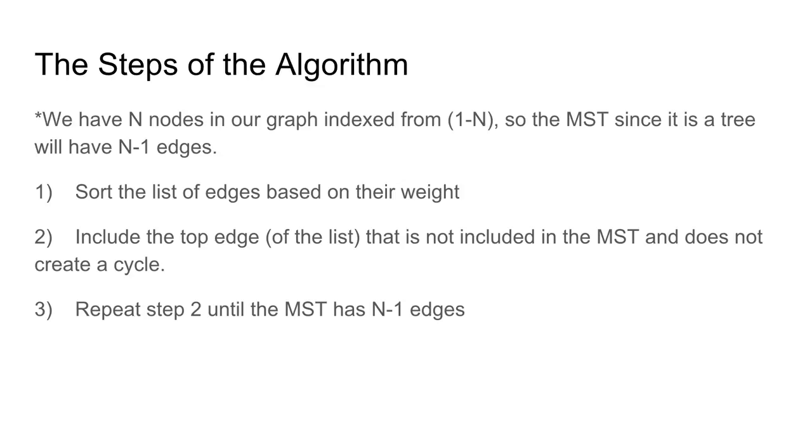Then we're gonna go to step two. We're gonna include the top edge of the list that is not included in the MST and does not create a cycle. So we have two things to watch here: not being included and does not create a cycle. And then step three, which is repeating step two until we have N minus 1 edges.